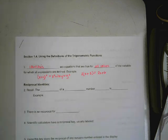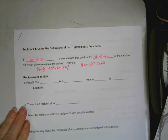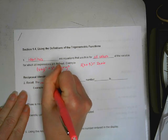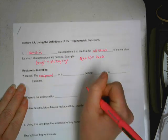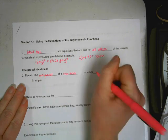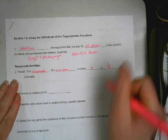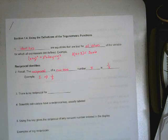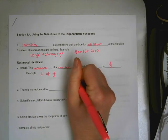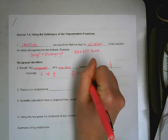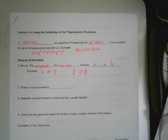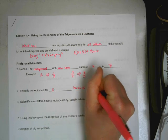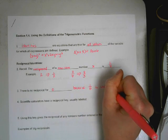The first group of identities we're going to talk about are the reciprocal identities. A quick reminder, the reciprocal of a non-zero number x is 1 over x. For example, non-zero number 2, the reciprocal of 2 is 1 half. If they give you a fraction to start with, the reciprocal of 3 fourths is 4 thirds. But there is no reciprocal for 0, because 1 over 0 is undefined. It doesn't get a reciprocal.